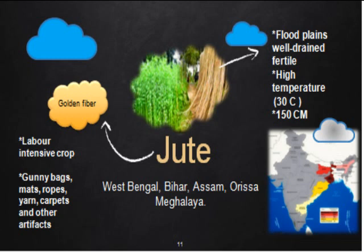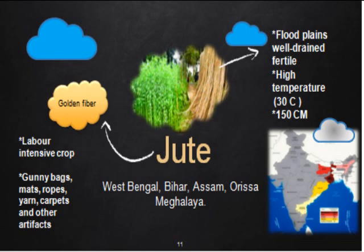Jute, known as the golden fiber, is the second most important fiber crop of India. It is grown in West Bengal, Bihar, Assam, Odisha, and Meghalaya — basically in coastal regions. The Hooghly basin is the leading jute-producing area in the country. Jute grows well in flood plains and khadar plains where soil is well-drained and fertile. It requires high temperature around 30 degrees Celsius and high rainfall around 150 centimeters. It is labor-intensive because it requires labor for processing; gunny bags, mats, ropes, yarn, and carpets are made from it.